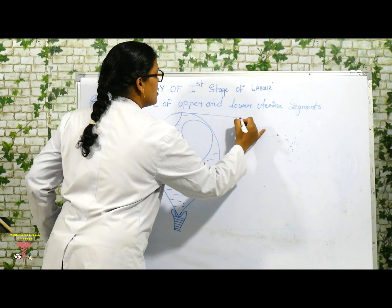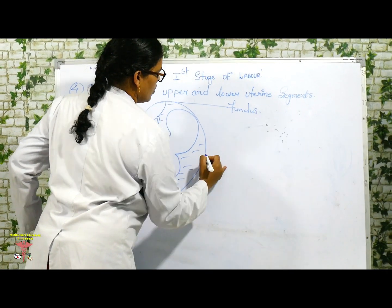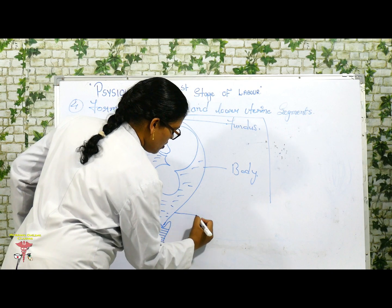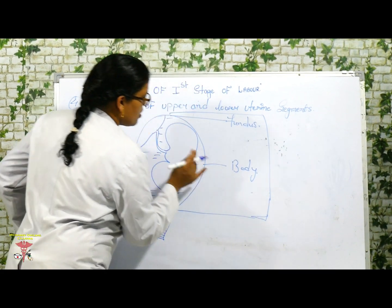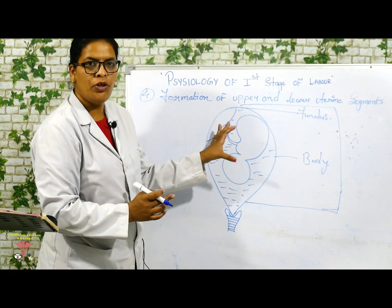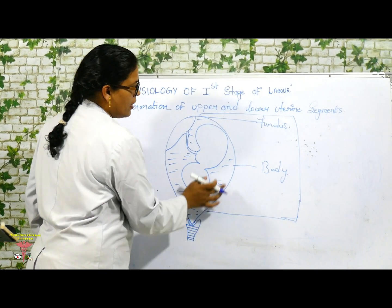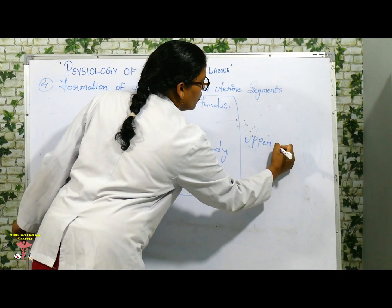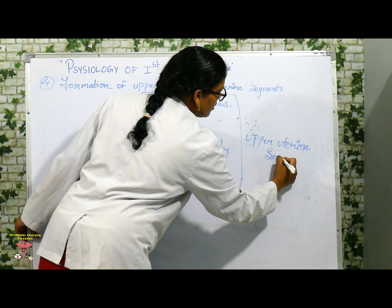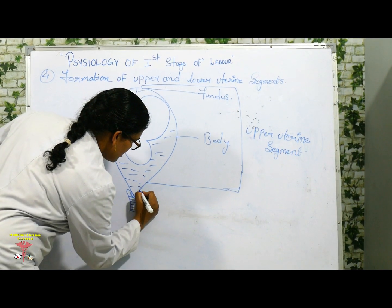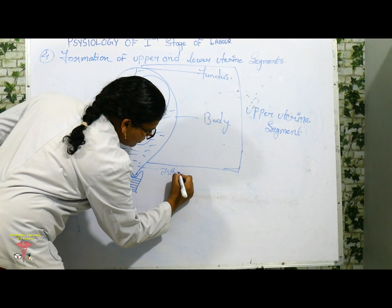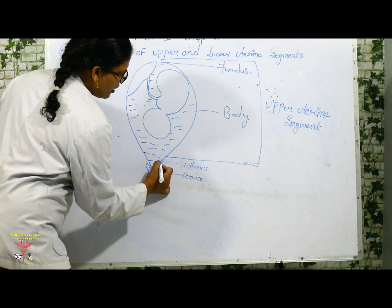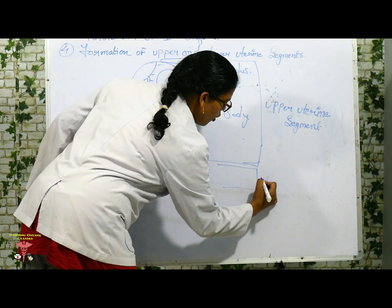This is the fundal region, and this is the body of the uterus. This portion is the muscular portion of the uterine body. The fundal region and body of the uterus together form the upper uterine segment. The isthmus and cervix, which are the narrow region of the uterine body, form the lower uterine segment.